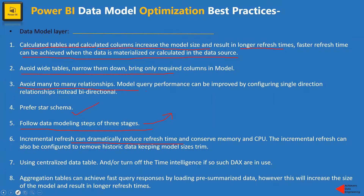If you don't know how to set up incremental refresh, please let me know in the comments and I'll make another video on it. Another important factor is using a centralized date table. When using a centralized date table in Power BI, instead of creating a date hierarchy for each date column in the model, Power BI will refer to the defined date table, reducing a lot of data model size and increasing performance. Also, if you are not using any time intelligence DAX functions, please turn off the time intelligence feature for that report in Power BI file options.